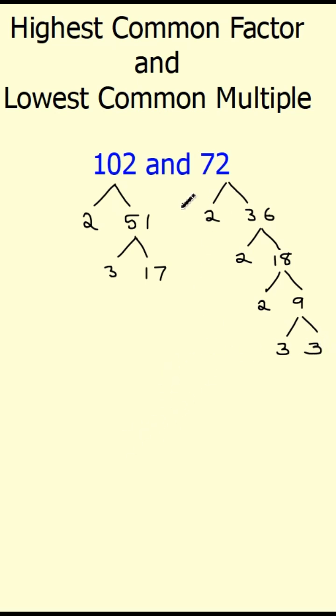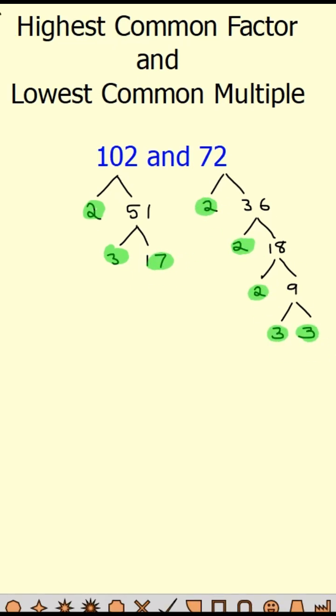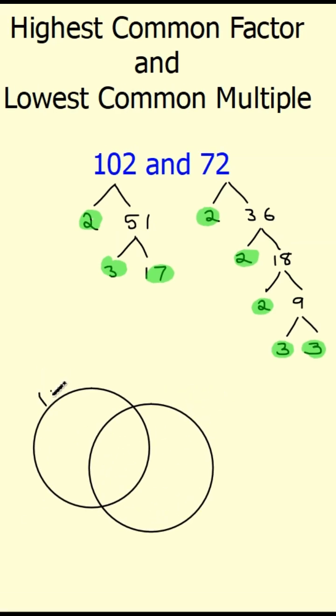Once we've done that, we then sort these values into a Venn diagram. These are our factors that we're ending up with, and we're sorting them into a Venn diagram. The ones they share in common go in the middle. So they both have a 2, they both have a 3.